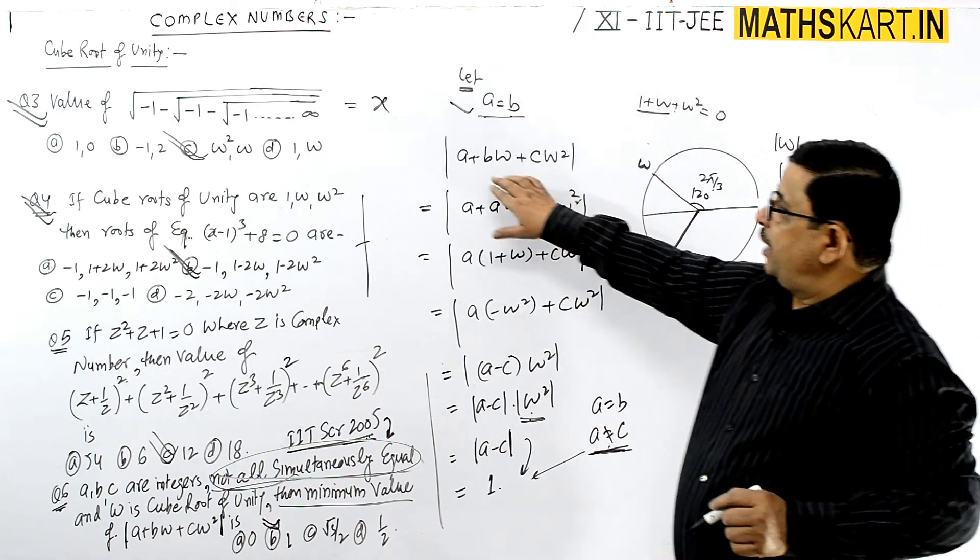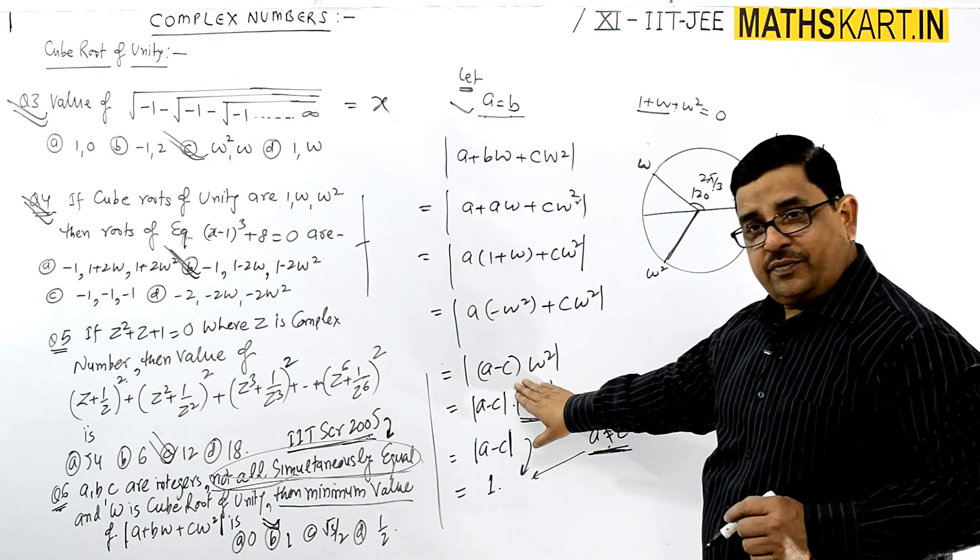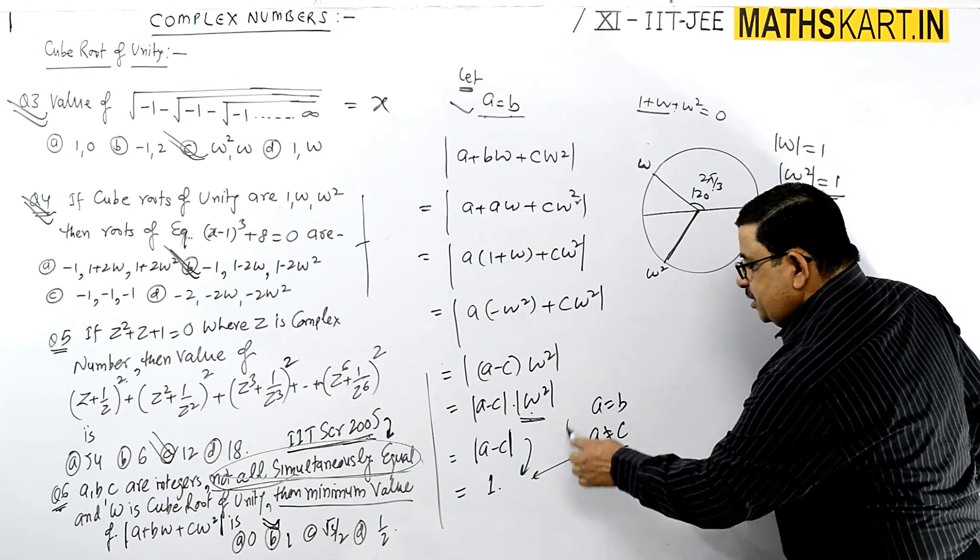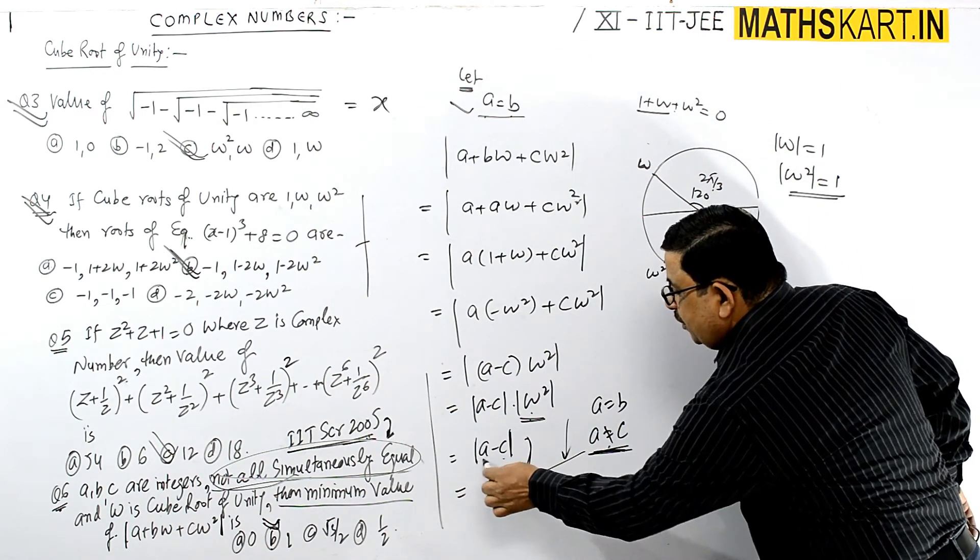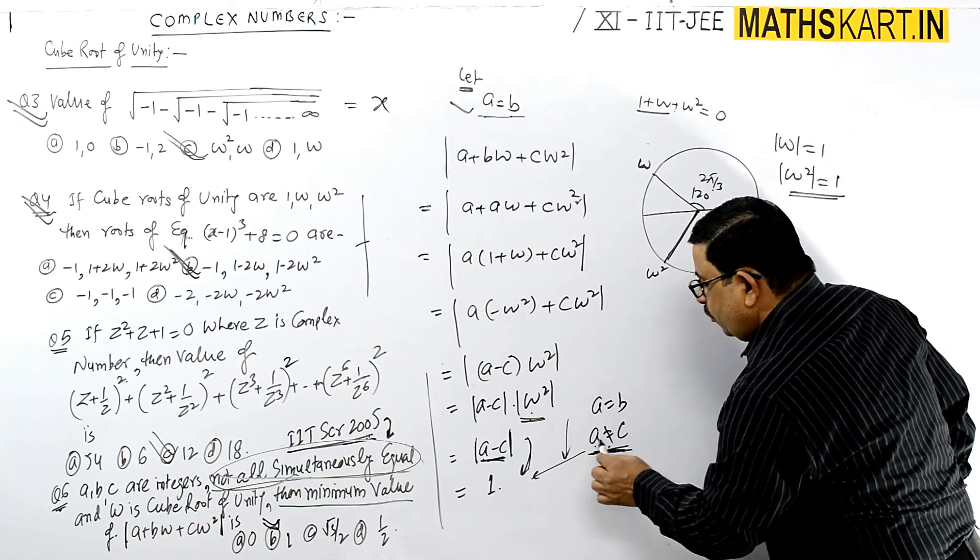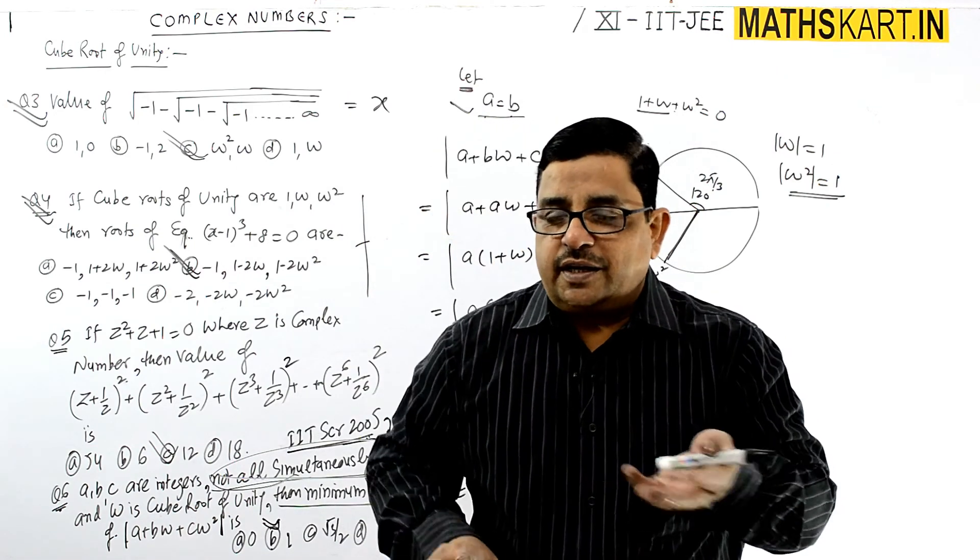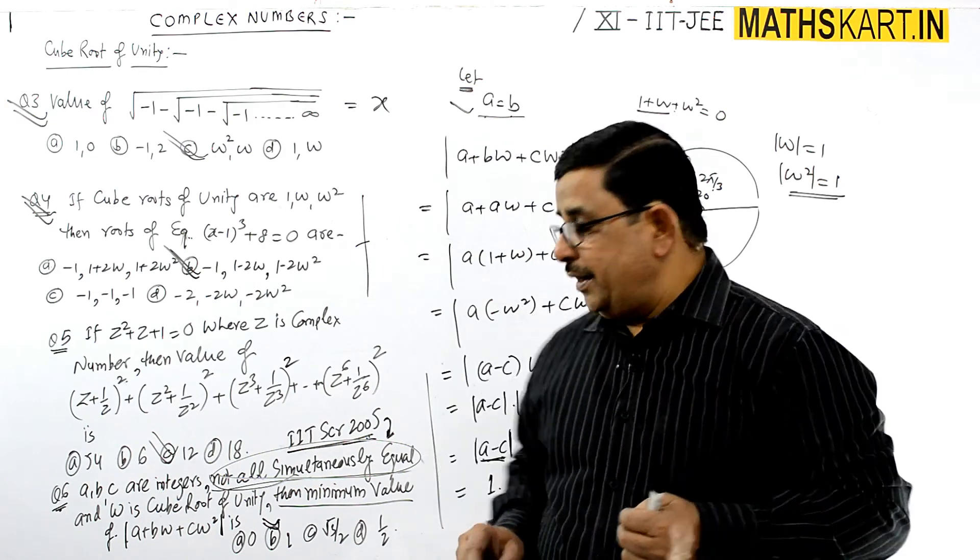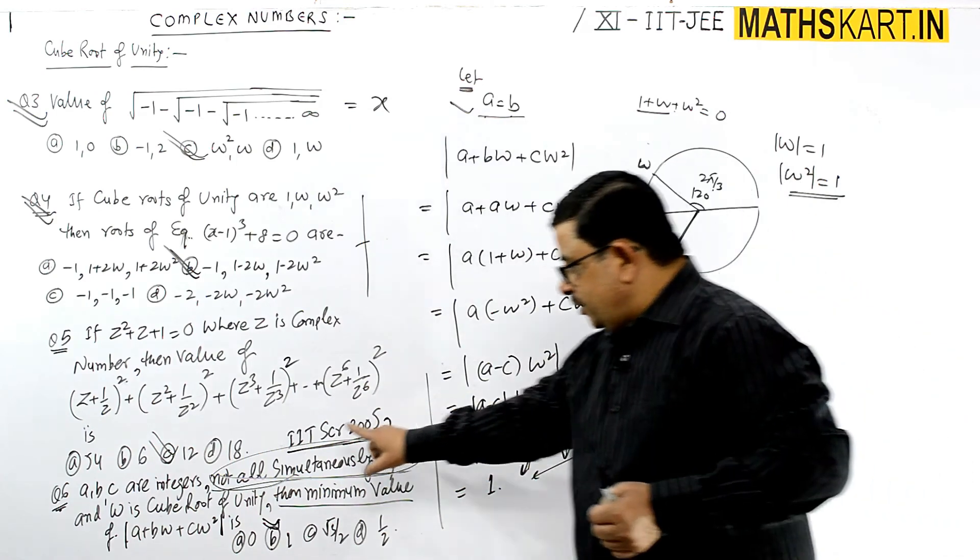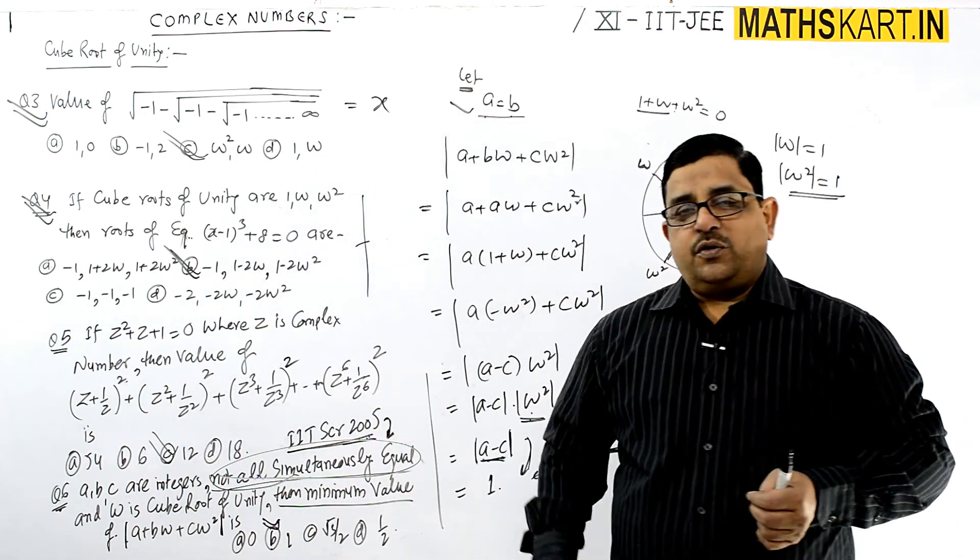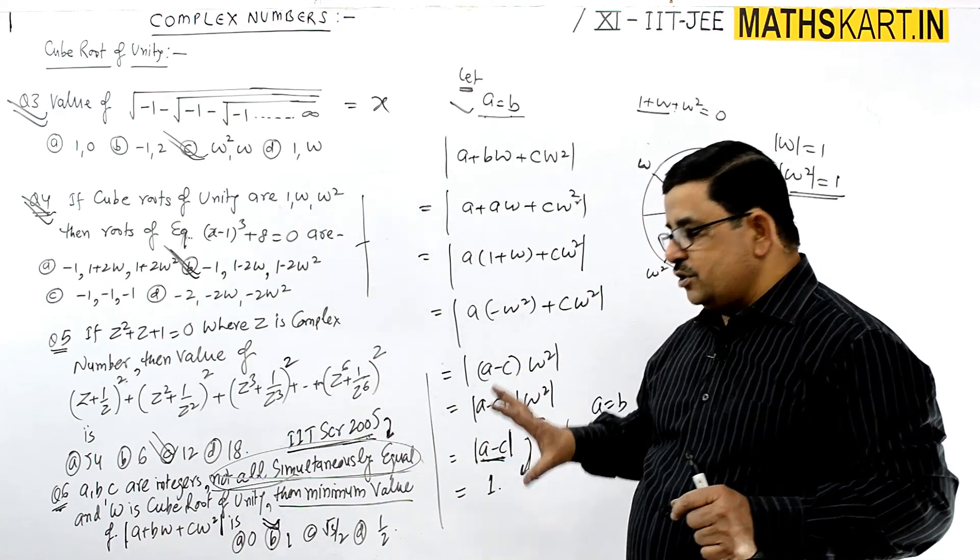When this question was given in IIT, many things were considered. We used the 'not all simultaneously equal' condition - we wrote two equal and the third not equal. This helped us solve to reach the final decision that two distinct integers would have minimum difference one, giving minimum value one.